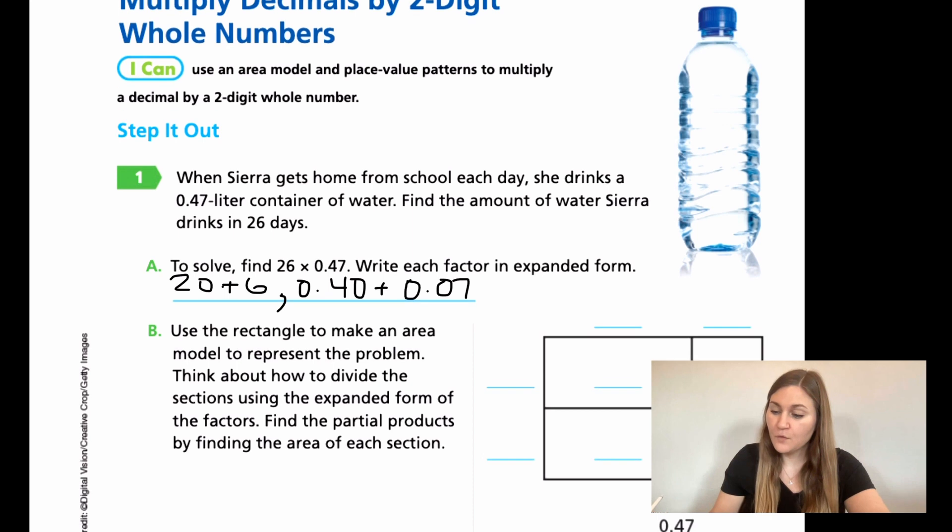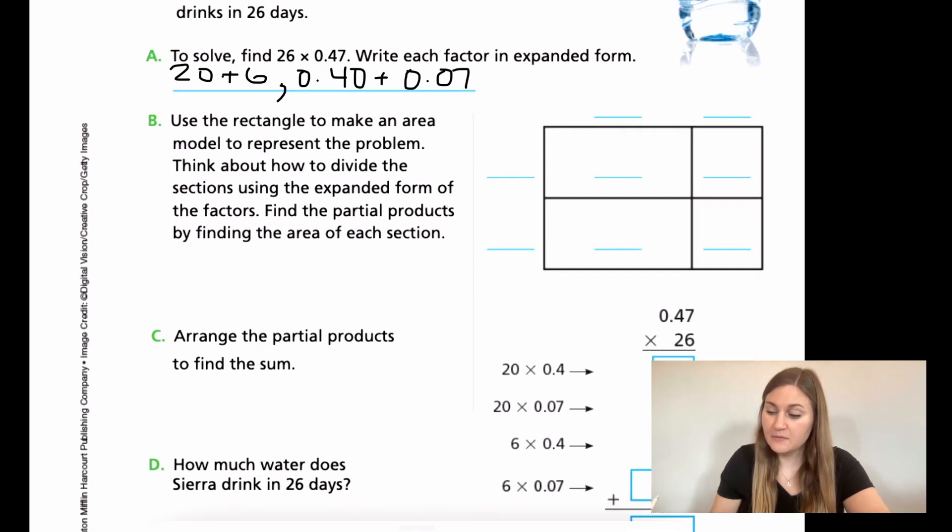Now, for B, it says use the rectangle to make an area model to represent the problem. Think about how to divide the sections using the expanded form of the factors. Find the partial products by finding the area of each section. Okay, so I'm going to take my parts and I'm going to put them on the outside of the box, and then I'm going to, kind of like what they said with area, I'm going to multiply the two sections together in the box. So on the left-hand side, I'm going to put my 20 and my 6 for my 26, and then on top, I'm going to write my 0.4, and then I'm going to write my 0.07 on top.